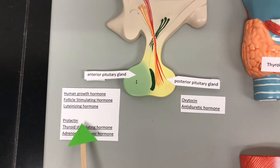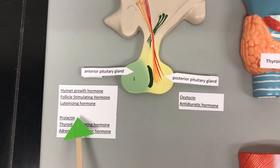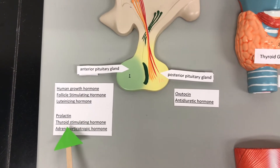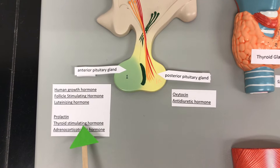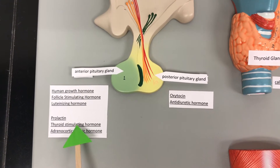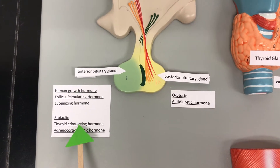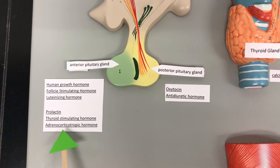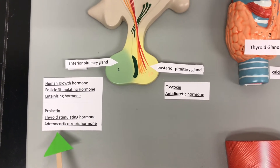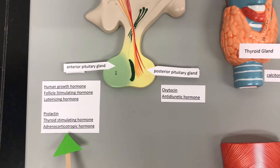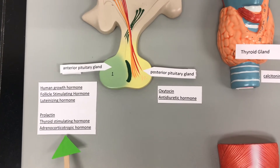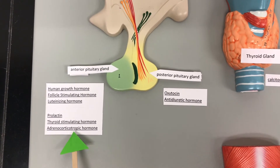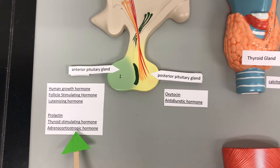Prolactin stimulates milk production in the mammary glands. Thyroid stimulating hormone stimulates the thyroid to make T3 and T4. Adrenocorticotropic hormone stimulates the adrenal cortex to produce long-term stress hormones.